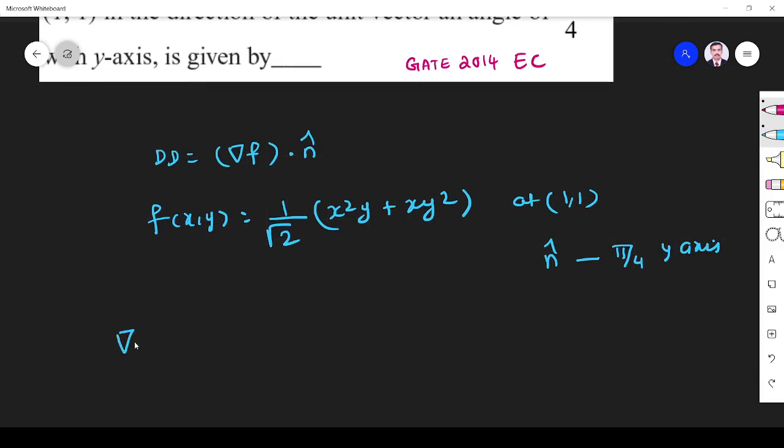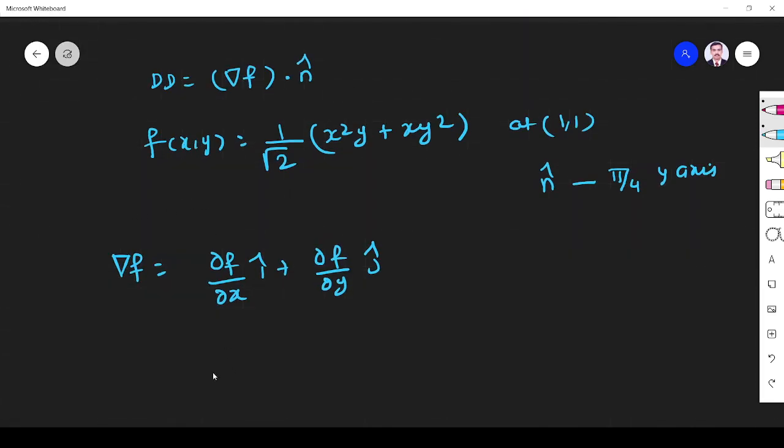So first I find ∇f, the gradient of f. The gradient of f is given by (∂f/∂x)î + (∂f/∂y)ĵ. So this 1/√2 is constant, so I take it outside. If I differentiate f with respect to x, I will get (2xy + y²)î. Then ∂f/∂y, differentiating with respect to y, is (x² + 2xy)ĵ.